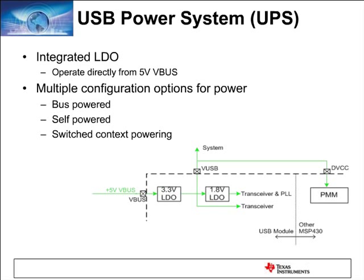The MSP430, as part of its USB solution, offers an integrated LDO, which means you have the option of powering the MSP430 off the 5-volt bus. There are three possible ways to power an MSP430 USB device: one is bus-powered, completely supplying power from V-Bus and powering down when V-Bus is not present; two is self-powered, supplying power from a battery regardless of V-Bus; and three is switched-context powering, the most popular configuration.